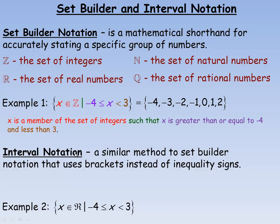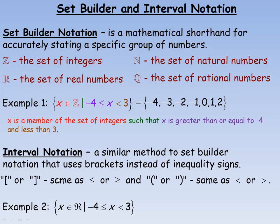Interval notation is a similar method to set builder notation, but it uses brackets instead of inequality signs. Square brackets mean less than or equal to, or greater than or equal to. Round brackets mean strictly less than or greater than. If you're including a specific number at the end of your interval, use square brackets; if the number is not included, use a round bracket.